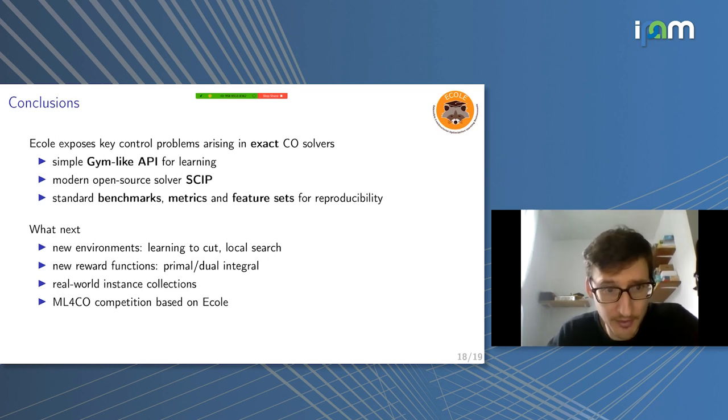And something I really care about is once we have this library with standard benchmarks, metrics, and so on, then we can very easily set up a competition. An open competition in a conference, say NeurIPS or whichever conference, and just provide the API, tell participants, you can use this API, this is the benchmark, and train your models and send us the results. So it's something also we are aiming for with this library.